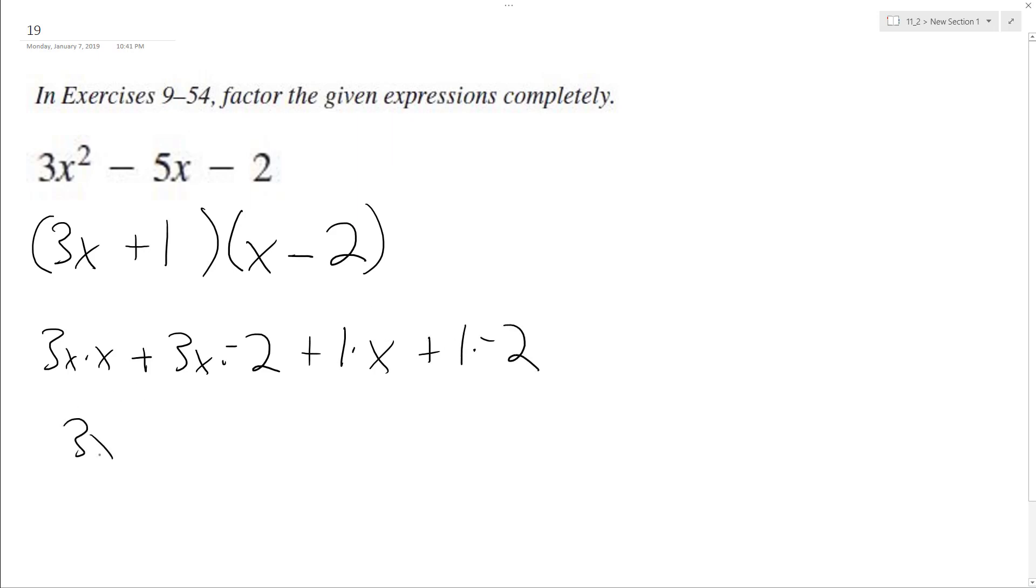So we end up with 3x² - 6x + x - 2, and combine everything: 3x² - 5x, because it's negative 6x plus x, minus 2.